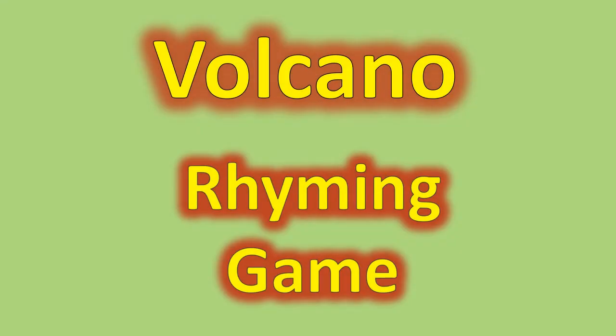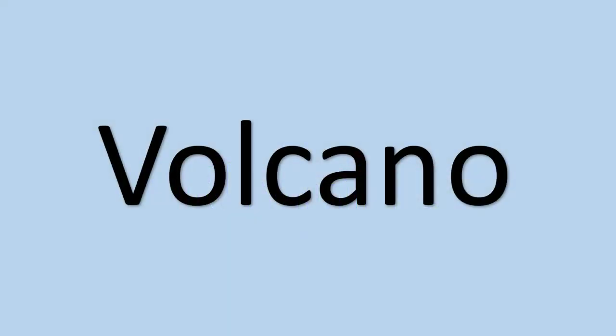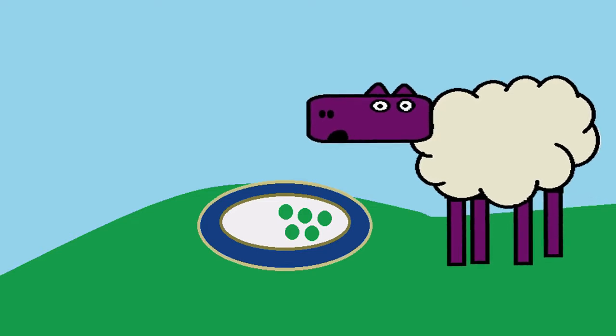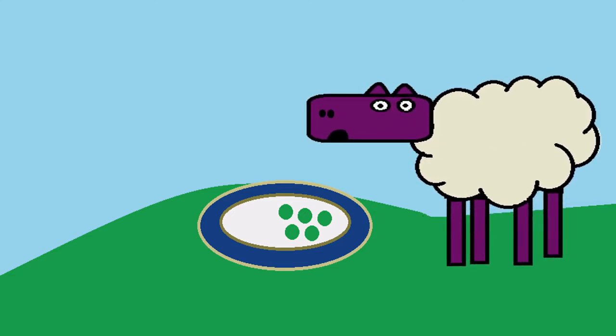Let's play a volcano rhyming word game. Put on your thinking caps. Look at the word volcano — we will rhyme the last sound, which is O. So think of words ending in the O sound. Sheep is eating his vegetable lunch. He is eating peas and a vegetable that rhymes with volcano. It grows underground. What is it? Potato! Sheep loves potatoes.